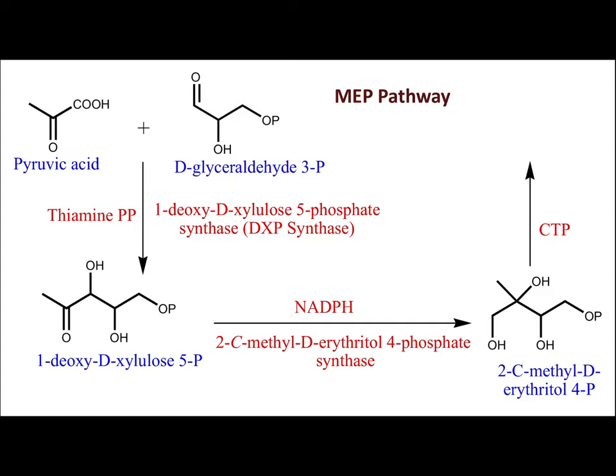Fosmidomycin is an antibiotic originally isolated from cultured broth of bacteria of the genus Streptomyces. It acts as an analog of the rearrangement intermediate in the reaction catalyzed by MEP synthase (DXP reductoisomerase), preventing the conversion of DXP to MEP. Fosmidomycin is an anti-malarial drug. This concludes the MEP pathway lecture.